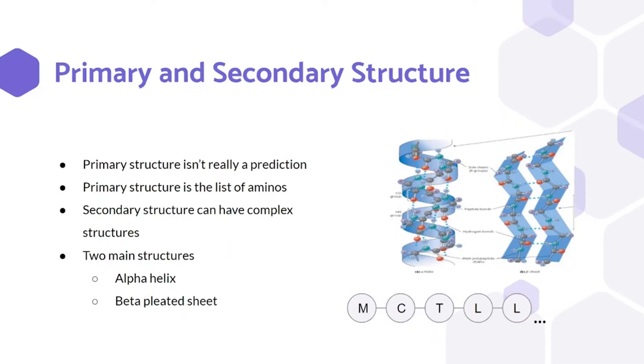The secondary structure is where prediction can start occurring as that is where complex structures start to form. The two most commonly referenced structures are the alpha helix, shown on the left, and the beta-pleated sheet, shown on the right.